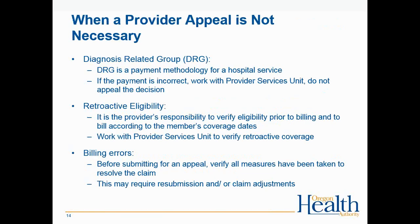When a provider appeal is not necessary: for DRG (diagnosis related group) payment discrepancies, work with the provider services unit rather than filing an appeal. For retroactive eligibility, it is the provider's responsibility to verify eligibility prior to billing and to bill according to the member's coverage date; work with the provider services unit on those situations. Before submitting an appeal, verify that all measures have been taken to resolve the claim, which may require resubmission or claim adjustments.